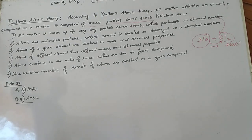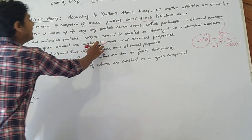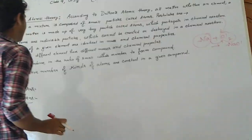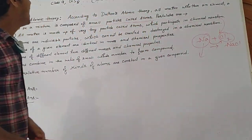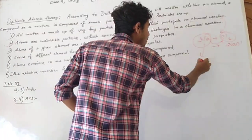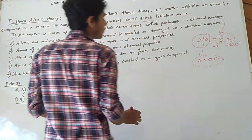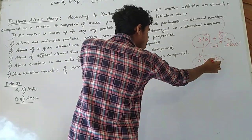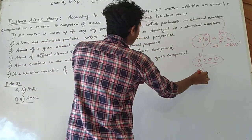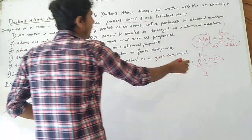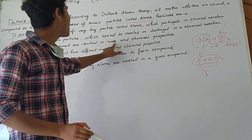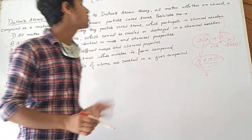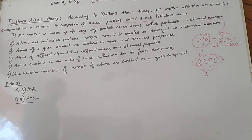Always remember that. Postulate number 3 states: atoms of a given element are identical in mass and chemical properties. For example, sodium has multiple atoms, and the properties and mass of all those atoms are similar — same mass and same chemical properties within a given element or compound.